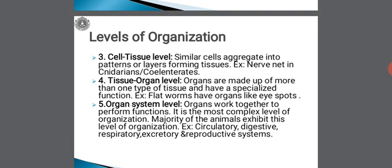Then comes the last type of body organization: organ system level. Here, organs work together to perform functions. It is the most complex level of organization, and the majority of animals exhibit this type. Examples: the different systems like circulatory, digestive, respiratory, excretory, and reproductive systems.